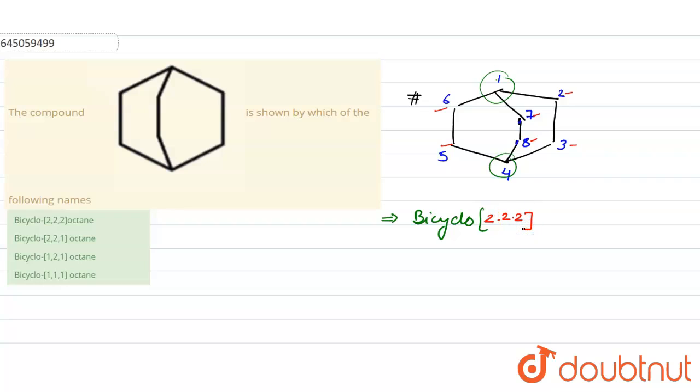Now how many total atoms are there? Total carbon atoms are there, eight. So now you will write eight. The word root for eight is oct. There is no double bond, triple bond, all are single bonds means alkane, so you will write -ane.